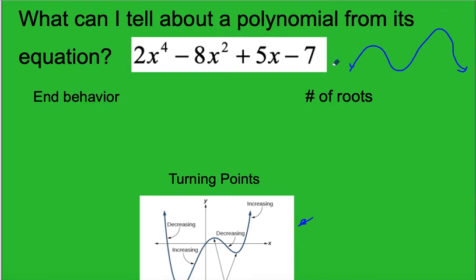What can I tell about a polynomial from its equation? Well first of all, this equation is in standard form. We could also see equations in factored form, which would be like x plus 1 squared, x minus 3, and x plus 4.